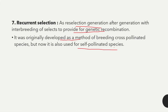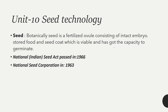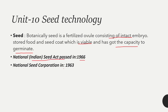The next unit is unit number 10 — seed technology. A seed is a fertilized ovule consisting of an intact embryo, stored food, and seed coat, which is viable and has the capacity to germinate. The National Seed Act was passed in 1966 and the National Seed Corporation was established in 1963.